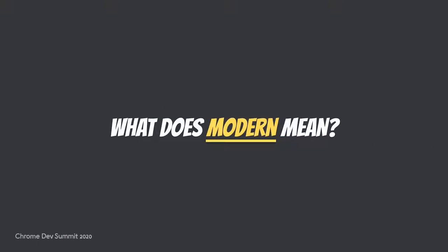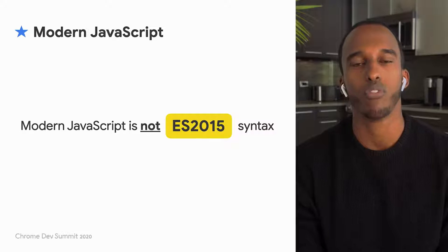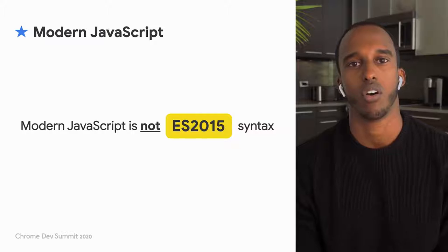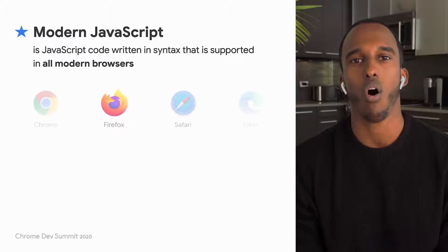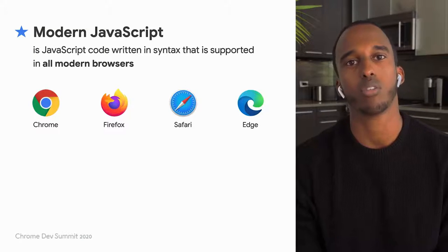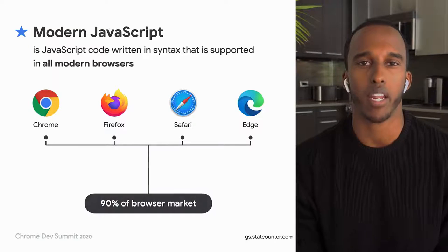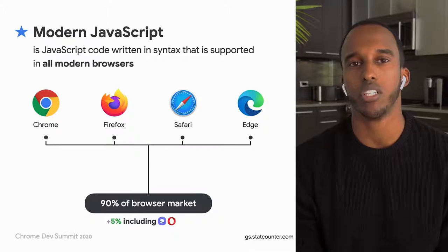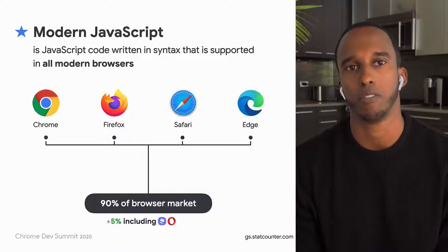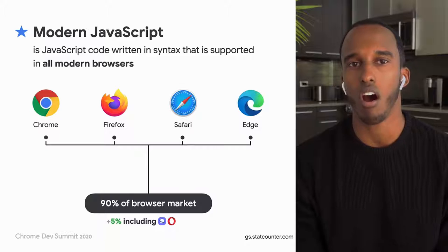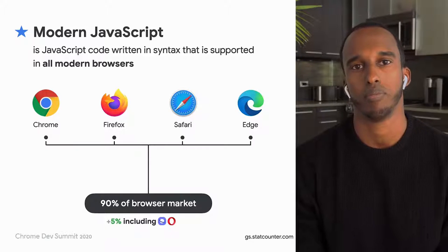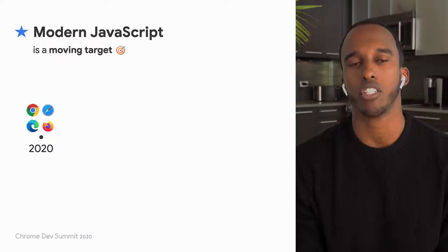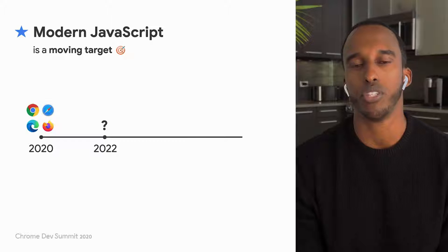Are you really going to be doing this the whole time, Jason? No, but that kind of begs the question: what exactly do we mean when we say modern code? Well, for starters, modern JavaScript is not ES2015 syntax, or ES2017, or even ES2020. It's code written with syntax that is supported in all modern browsers. Right now Chrome, Edge, Firefox, and Safari make up 90% of the browser market. Another 5% of usage comes from browsers based on the same rendering engines, which support roughly the same features. That means 95% of visitors to your site are using a fast modern browser. The browsers that make up majority market share are also evergreen, which means they get new JavaScript features over time.